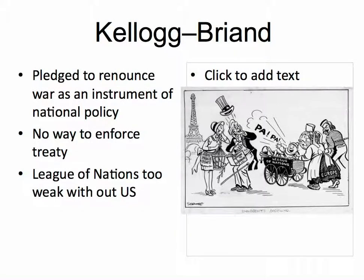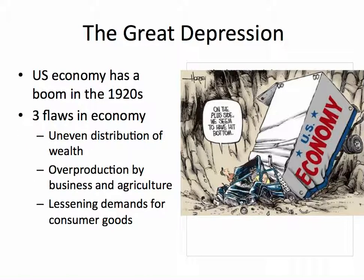The Dawes Plan and the Kellogg-Briand Pact are working fine as long as the economy is doing well. However, the U.S. economy was doing phenomenal in the 1920s — there was a huge growth called the Roaring Twenties. But there were three major flaws in the economy. The first was an uneven distribution of wealth, meaning the really wealthy had a lot of money and the really poor had very little. Second was overproduction by business and agriculture — the more wheat or cars you produce, the less value each one has. And because enough people had bought cars, there was a lessening demand for consumer goods, so there was nothing for businesses to sell.